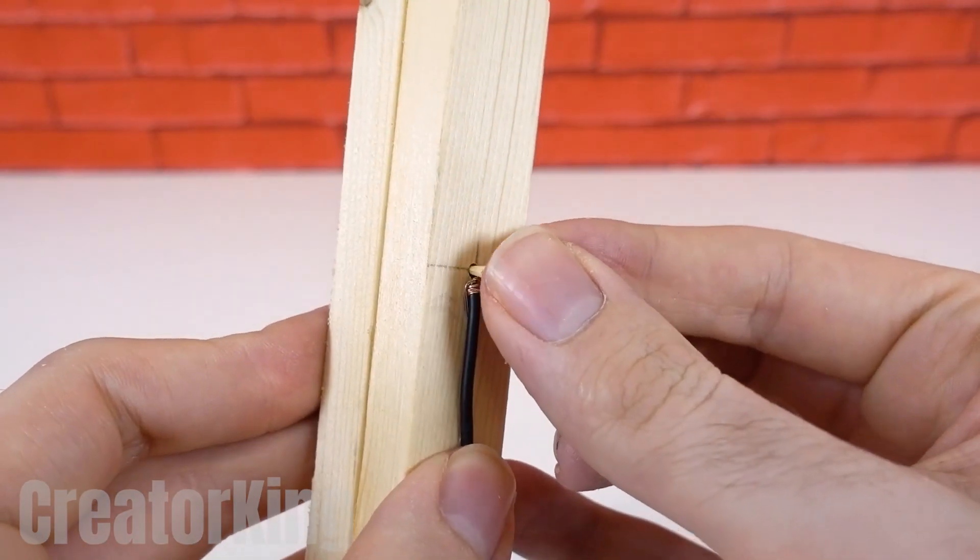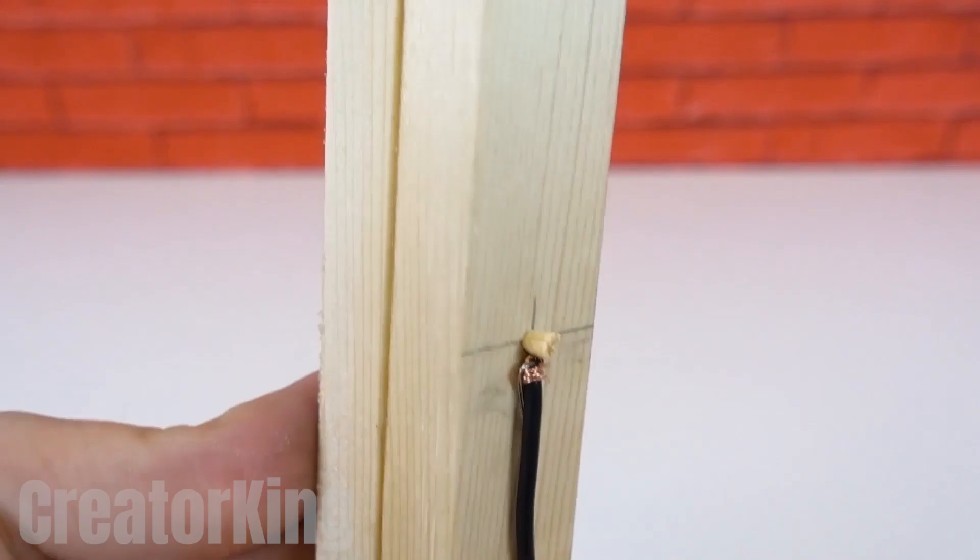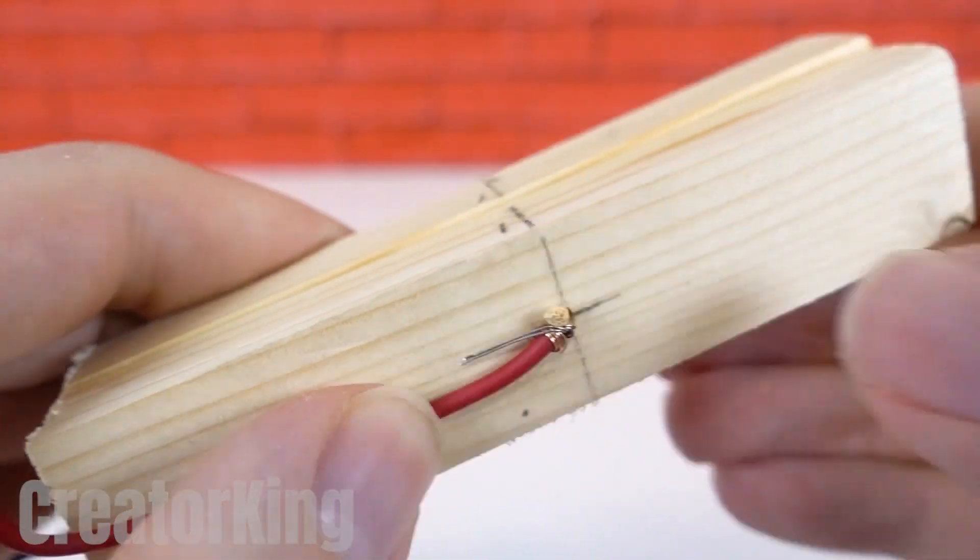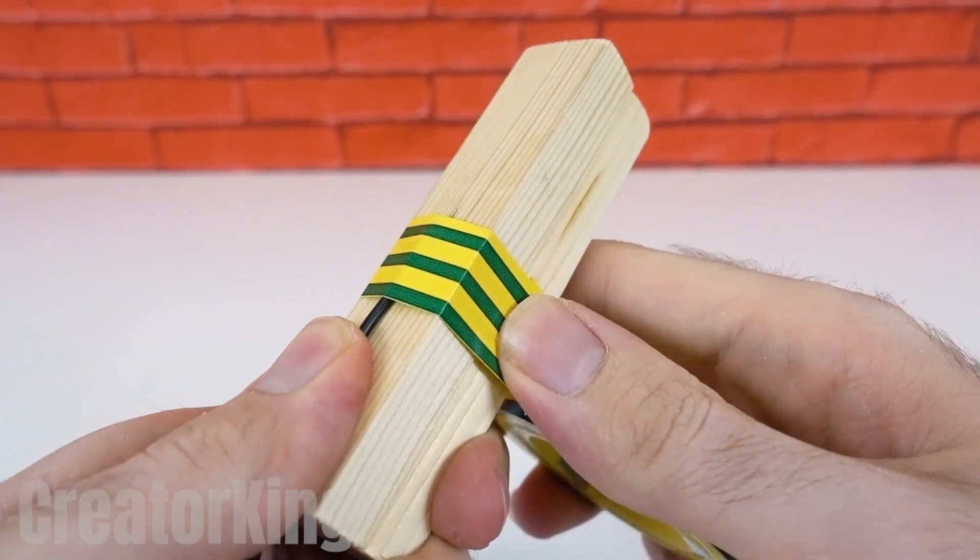Cut the tip off of this mini spear. We won't be needing the rest. Wrap everything in tape, completely insulating the connections.